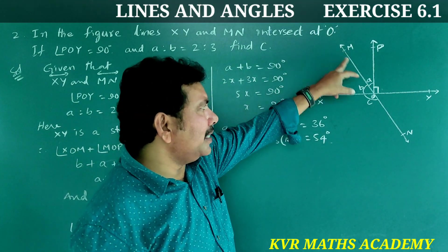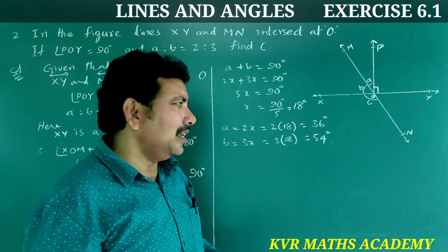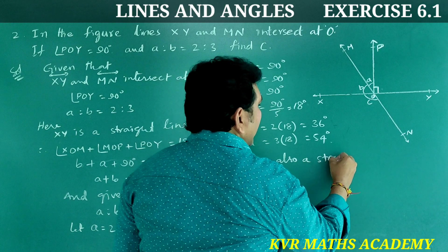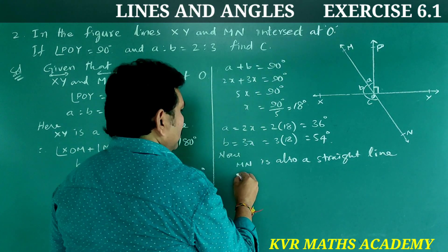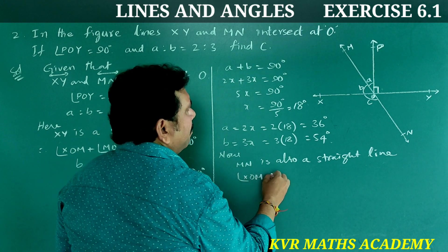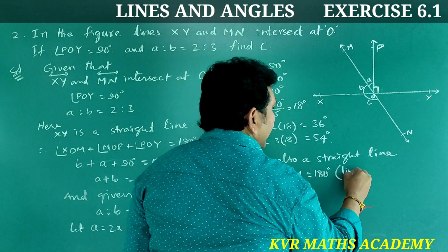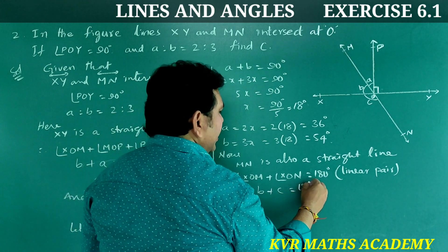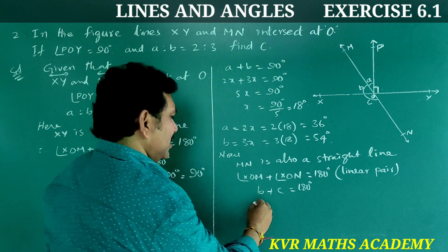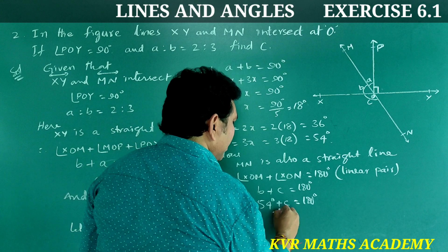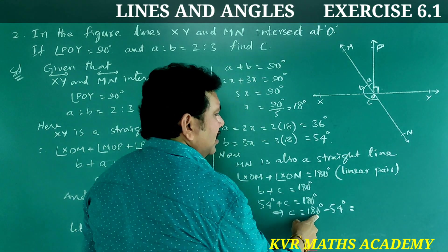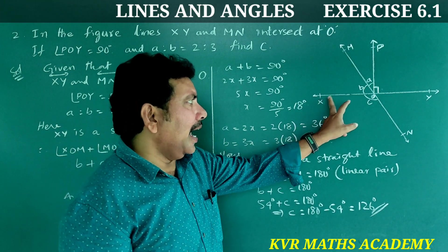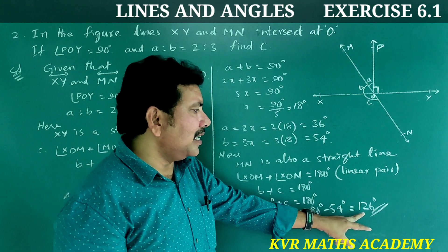MN is also a straight line, so B plus C equals 180 degrees — a linear pair. We already found B equals 54 degrees. Substituting: 54 degrees plus C equals 180 degrees, which implies C equals 180 minus 54 equals 126 degrees. So angle C, which is angle XON, is equal to 126 degrees.